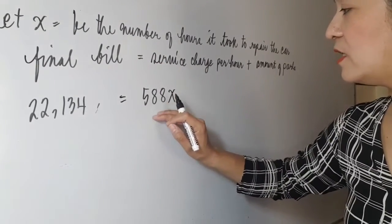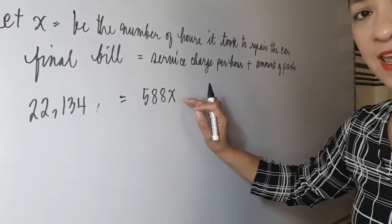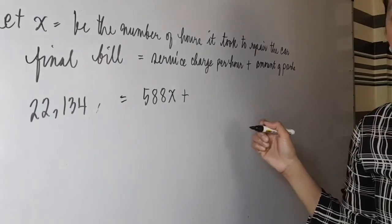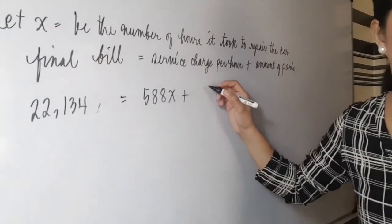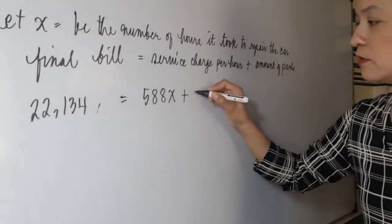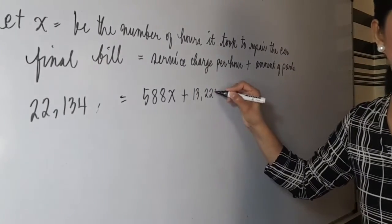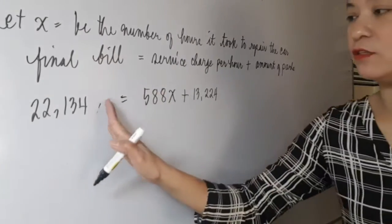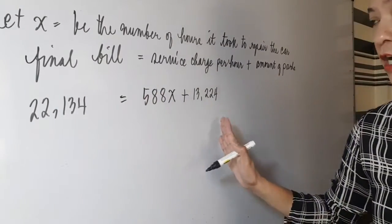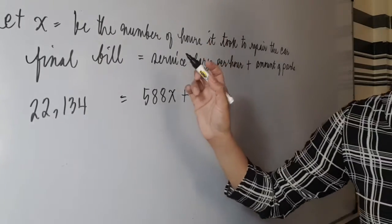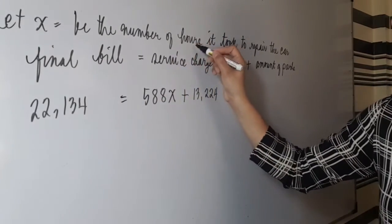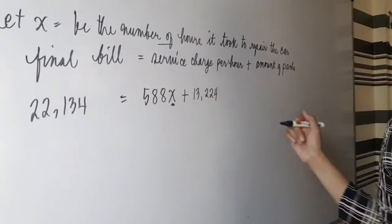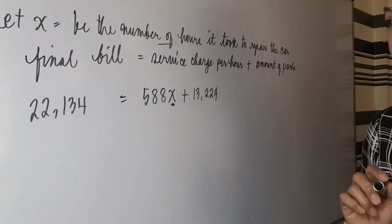The service charge is 588X, plus the amount paid for the parts, which is P13,224. So this is our equation. Now we can find X, the number of hours. This is our final equation. From our lesson last time, you have to isolate X on one side. We use the reverse operation or inverse operation. So: 588X + 13,224 − 13,224 = 22,134 − 13,224.